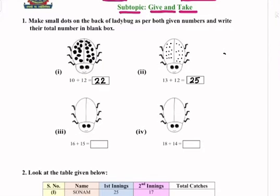Question 3: 16 plus 15 — 16 dots on the left side: 1, 2, 3, 4, 5, 6, 7, 8, 9, 10, 11, 12, 13, 14, 15, 16 — and 15 dots on the right side: 1, 2, 3, 4, 5, 6, 7, 8, 9, 10, 11, 12, 13, 14, 15. Now the total number of dots are 16 plus 15 equals 31.